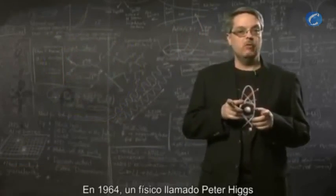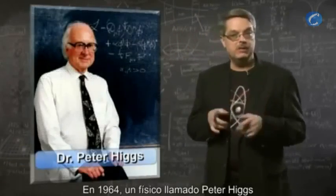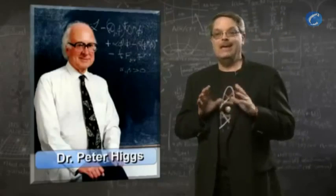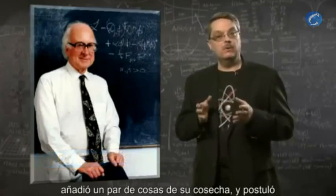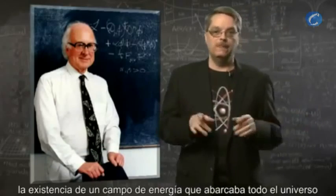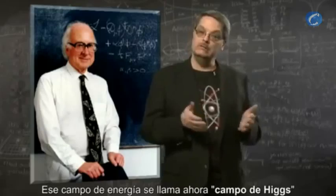In 1964, a physicist by the name of Peter Higgs took some ideas that were floating around at the time, added an insight or two of his own, and proposed that there was an energy field that permeated the entire universe. This energy field is now called the Higgs field.